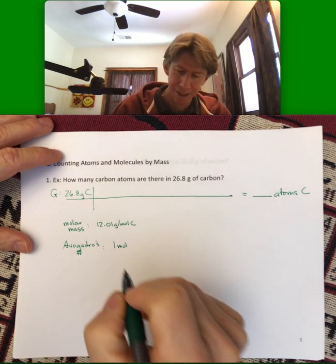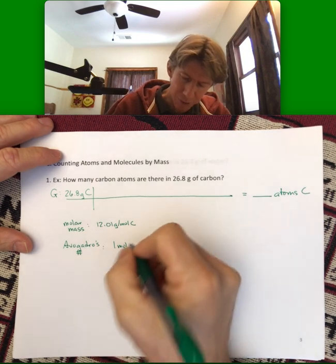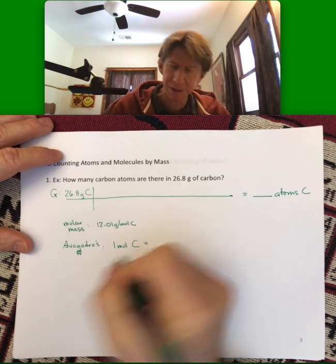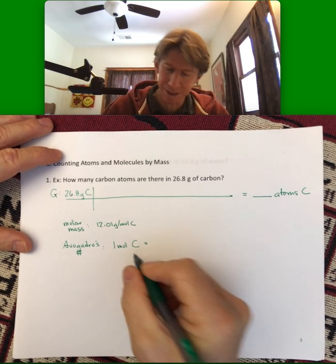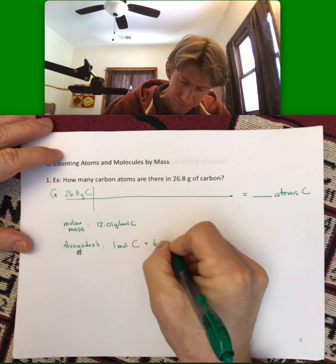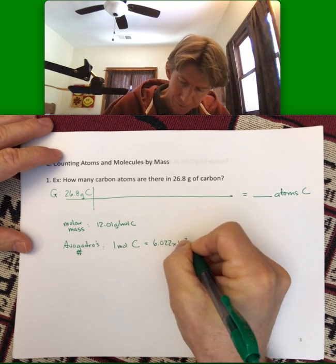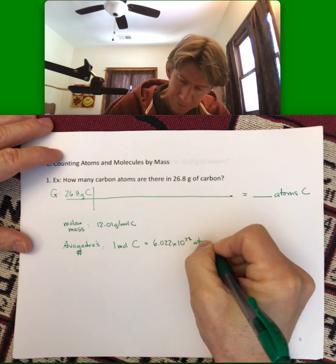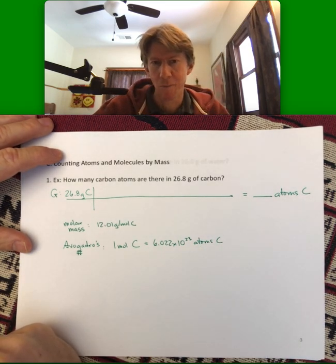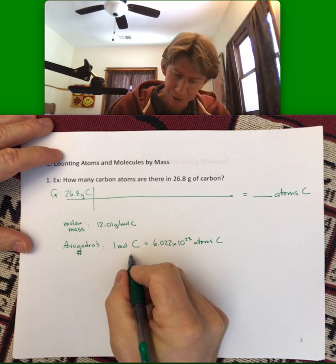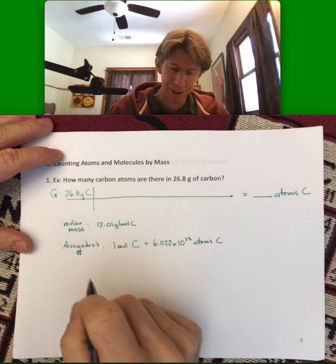It says that one mole of anything, and here I'm using the abbreviation for mole, just MOL, like I did there. So one mole of anything, but in this particular case carbon, is equal to 6.022 times 10 to the 23rd. In this case atoms, because this is just an atom. Atoms of carbon. And this is a unit conversion. So both of these are going to be our unit conversion factors.